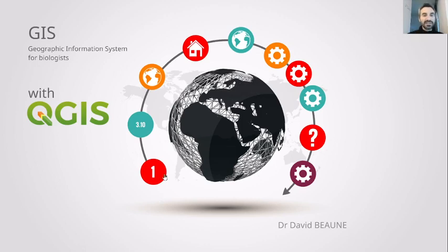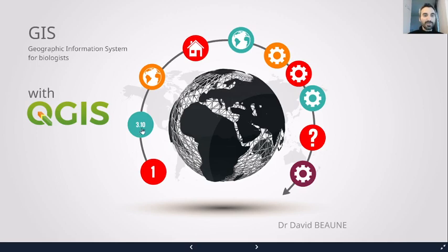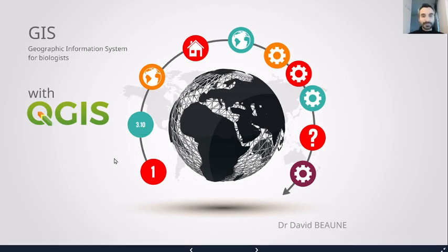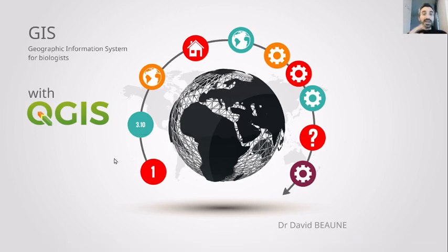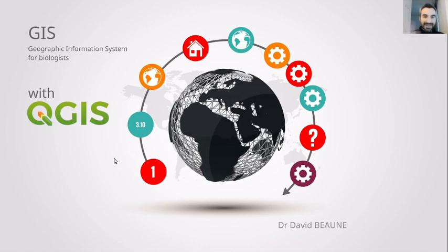QGIS is a software — this year it's version 2.10 and it's always evolving. You understood that there are coordinates and projections, which is quite important to keep in mind because we work on a globe and a map is flat.